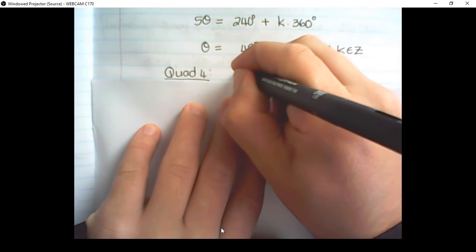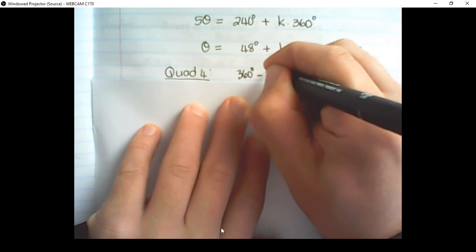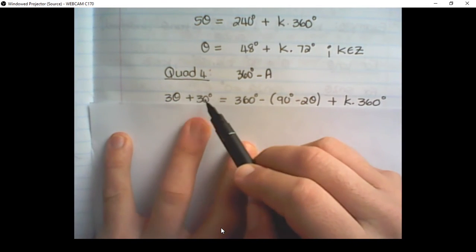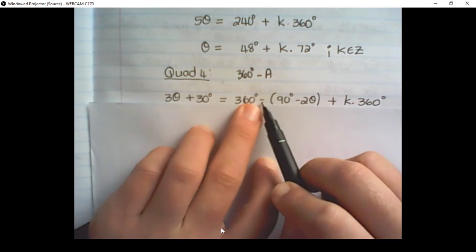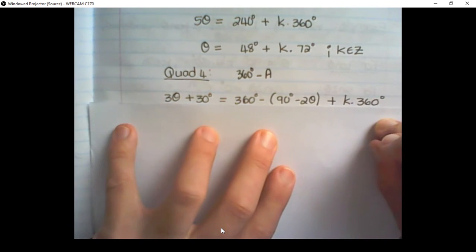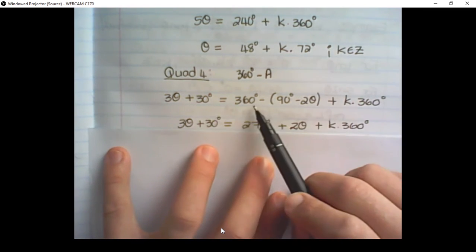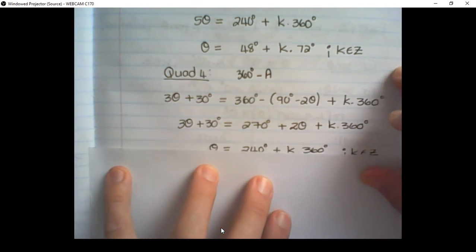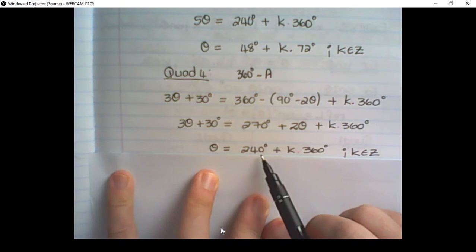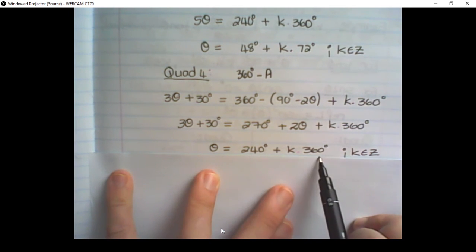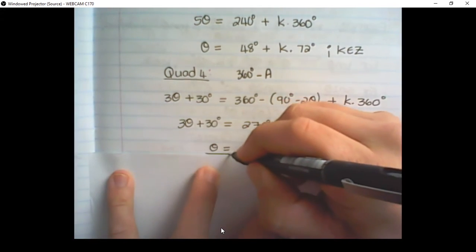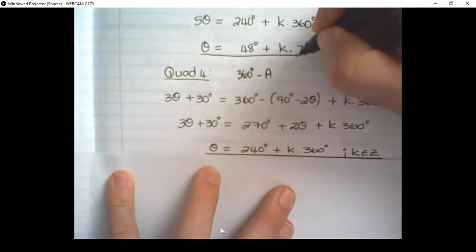For quadrant 4, we have 360° minus the angle. So: 3θ + 30° equals 360° − (90° − 2θ) plus k times 360. Simplifying by removing the brackets and moving variables to one side, we get θ equals 240° plus k times 360°. We do not need to divide because there is only one unit of θ. These give us our two solutions for θ.